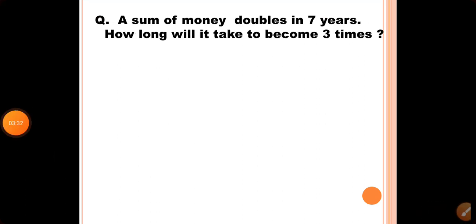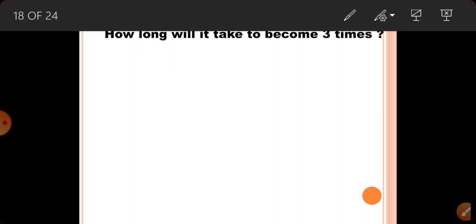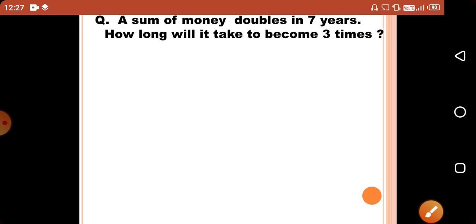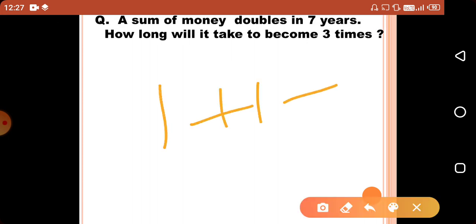Next question. A sum of money doubles in 7 years. How long will it take to become 3 times? So 1 money doubles in 7 years, means the principal will be equal to interest. So this is 7 years.